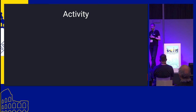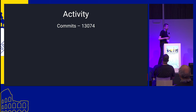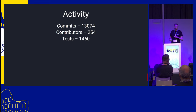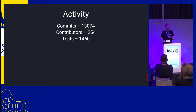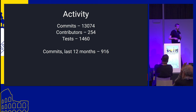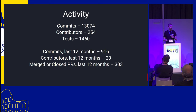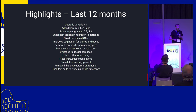That gives an idea of the breadth of the project. From an activity standpoint: in 17 years we've had over 13,000 commits to the repository, more than 250 different contributors, and about 1,500 tests for the different parts of the website's functionality. In the last 12 months we've had more than 900 commits, 23 different contributors, and despite that backlog mentioned at the start, we've dealt with more than 300 pull requests to add features, fix bugs, and so on.